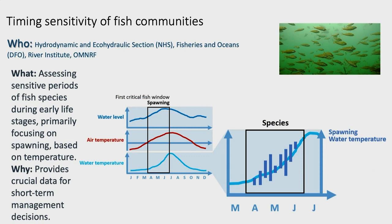Timing sensitivity of fish communities is a new performance indicator that doesn't produce a single target number. Rather, it produces a calendar showing different fish spawning windows and how they correspond to water level, air temperature, and water temperature. You can look at which species may be sensitive to water level changes at what particular time. This can very much help with decisions about deviations — identifying which fish would be negatively or positively affected by a particular management decision.